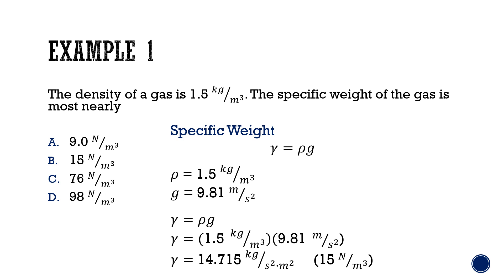From that, we will calculate a specific weight to be 14.715 kilograms per second squared times meters squared, which will round to 15 newtons per meters cubed, since kilograms over seconds squared can also be changed to newtons. So for the answer, we are selecting B, which is 15.0 newtons per meters cubed.